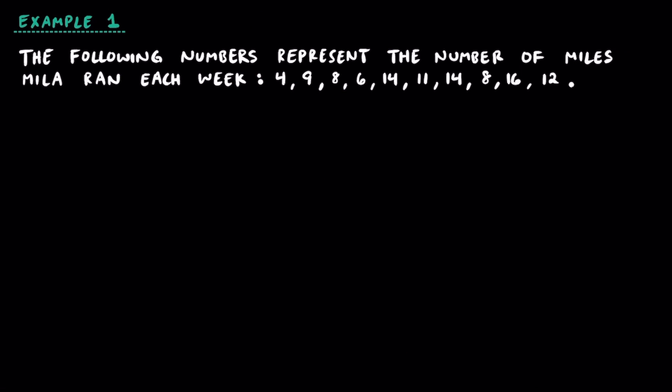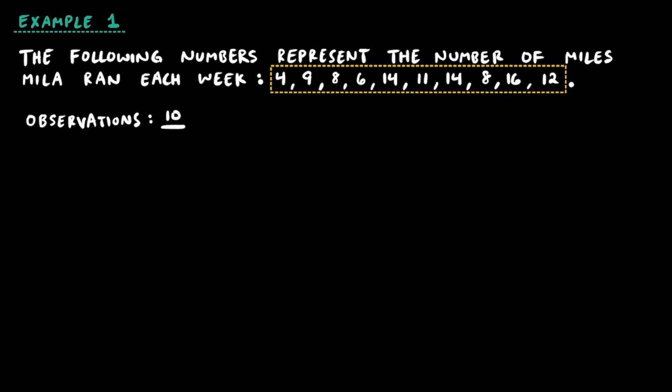Example 1. The following numbers represent the number of miles Mila ran each week. We have 10 observations. To get started, we're going to write them in order from least to greatest: 4, 6, 8, 8, 9, 11, 12, 14, 14, and 16.